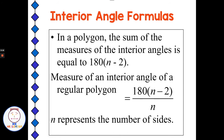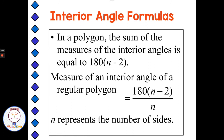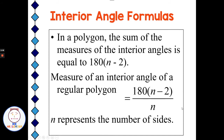The second formula is for the measure of each interior angle of a regular polygon — it only works where all the sides and all the angles are equal. That formula is 180 times (n minus 2) divided by n, which gives us the measure of each individual angle. So the first formula gives the sum for regular and irregular polygons; the second formula finds each angle, but only works for regular polygons.